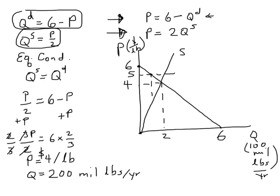Sellers want to supply, if the price is 5, sellers want to supply 2.5 hundred million, or that would be 250 million pounds per year. But buyers only want to buy 100 million pounds per year.